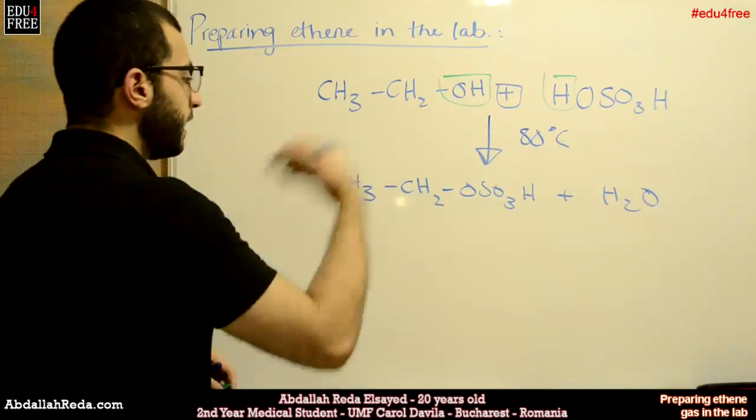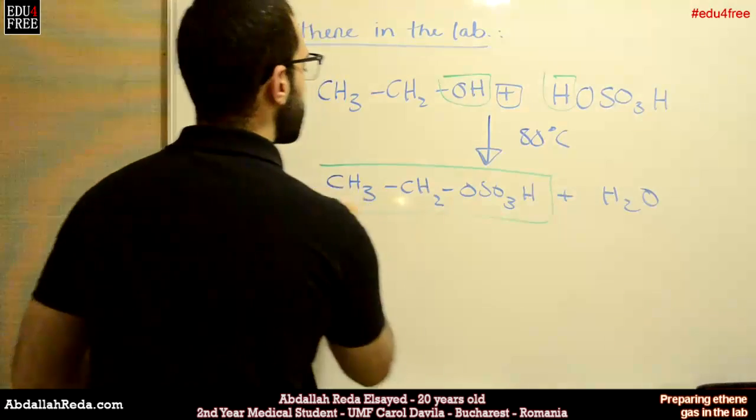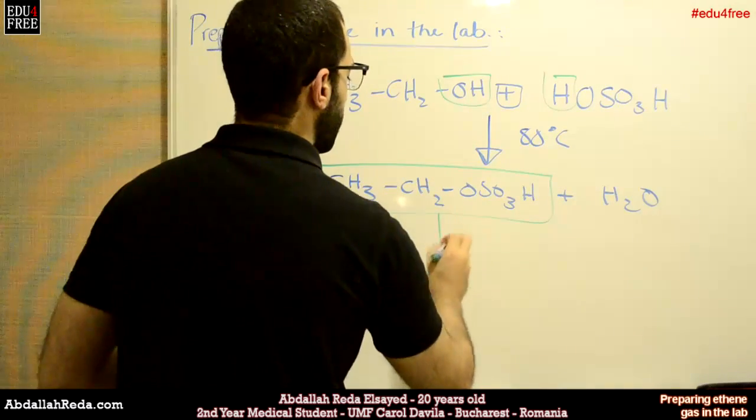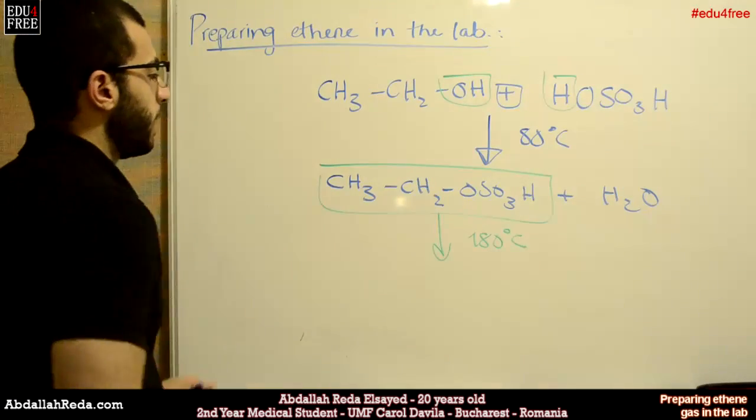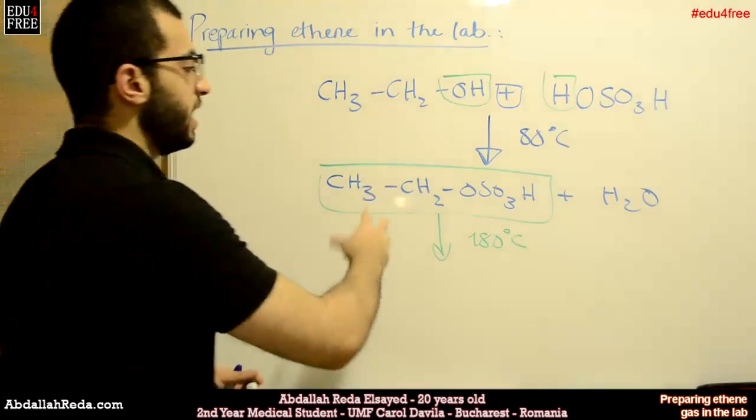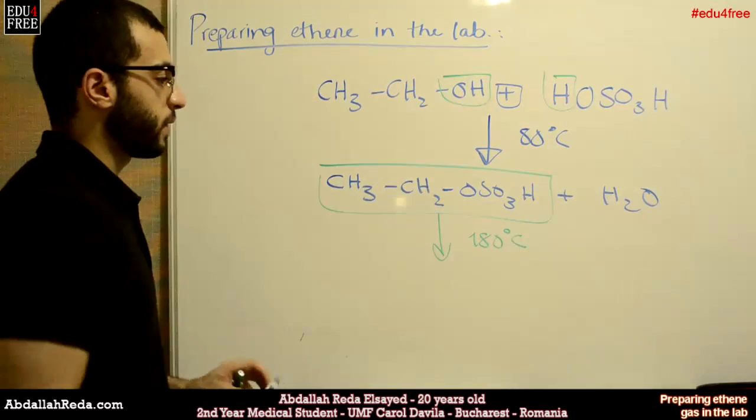When the heating increases to 180 degrees Celsius, this compound will break down into ethene and form sulfuric acid once again.